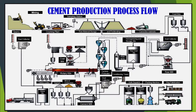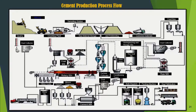The main raw material of cement is 80% limestone, and other raw materials are clay, silica sand, and iron sand. The cement production process flow consists of 5 stages: 1. Mining process, 2. Process of milling raw materials into raw flour, 3. The process of burning raw flour into clinker, 4. Process of milling clinker and additive material into cement, 5. Cement packing process.